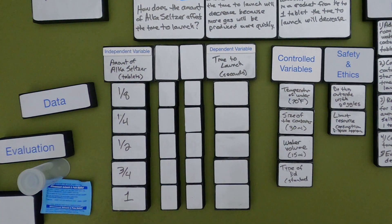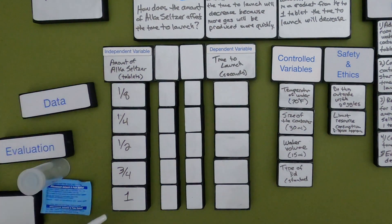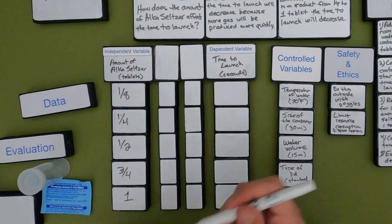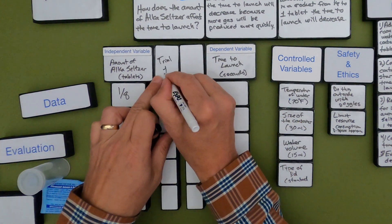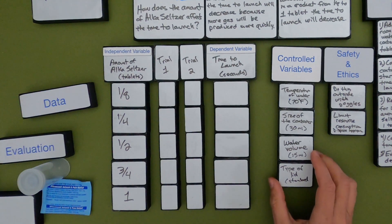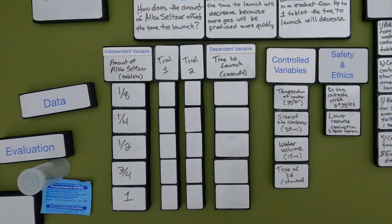Now I've got my data table with Alka-Seltzer amounts and time to launch across trial one and trial two. At this point I would go do the investigation, but since I don't have time in the video, I'll just write down the values I gathered earlier.